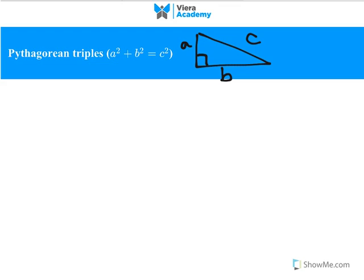In most SAT problems that involve Pythagorean triples, they use the same numbers. For example, it's very classic to find 3, 4, and 5, because 3 squared plus 4 squared equals 5 squared.